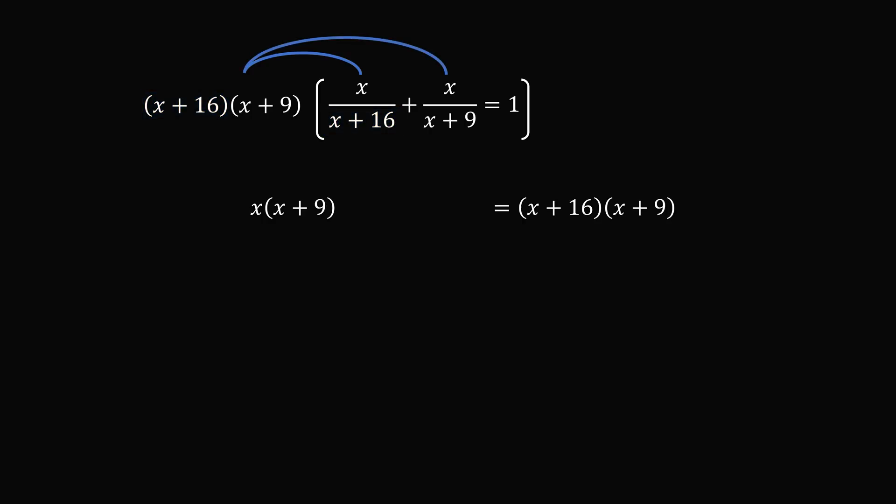Similarly, we distribute to the next term. The denominator x plus nine will cancel out with the factor x plus nine. So this simplifies to be x multiplied by x plus 16.